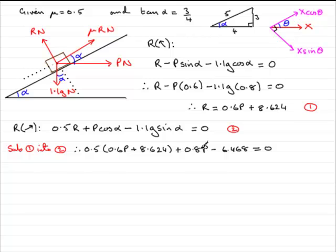Now, if we expand this and rearrange it for p, what you should find that you get is that if you do 0.5 times 0.6p and add it to 0.8p, you'll end up with 1.1p. So, I'll leave that up to you just to double check that. And if you do 0.5 times 8.624 and then take that term and the 6.468 to the other side of the equation, you should find that you get 2.156. And then, if I divide both sides by 1.1, you end up with p equaling 1.96 exactly. So, it's 1.96 newtons. So, I've skipped a few stages there purely because I'm running out of room. And I'm sure you should be okay with that.